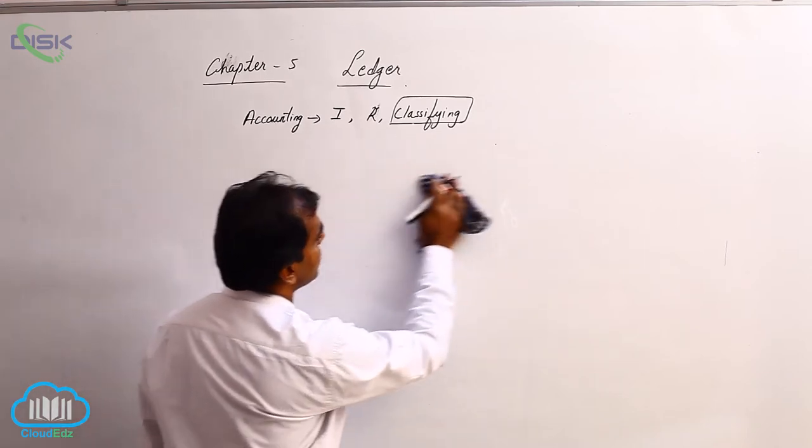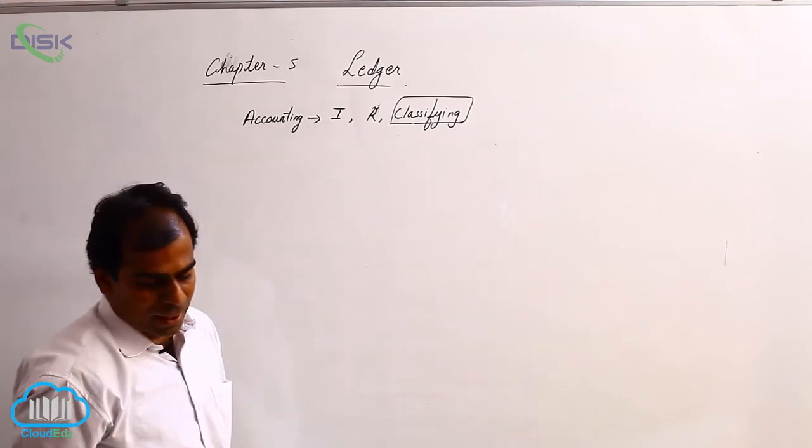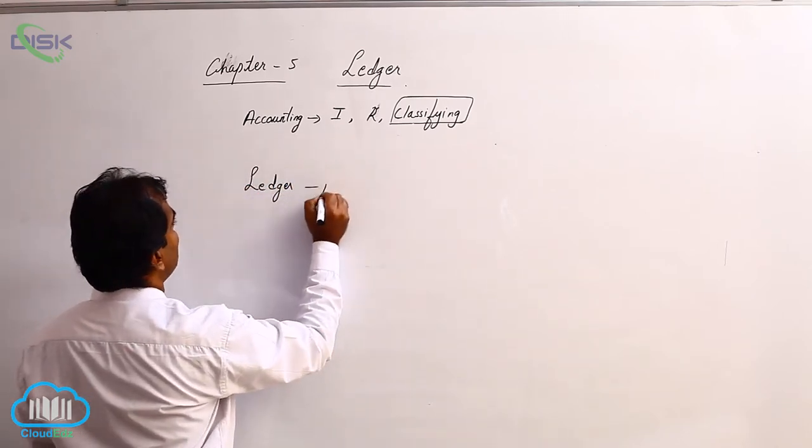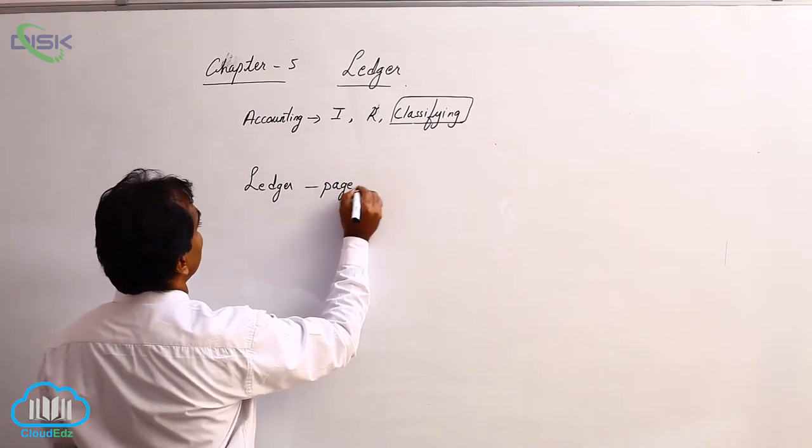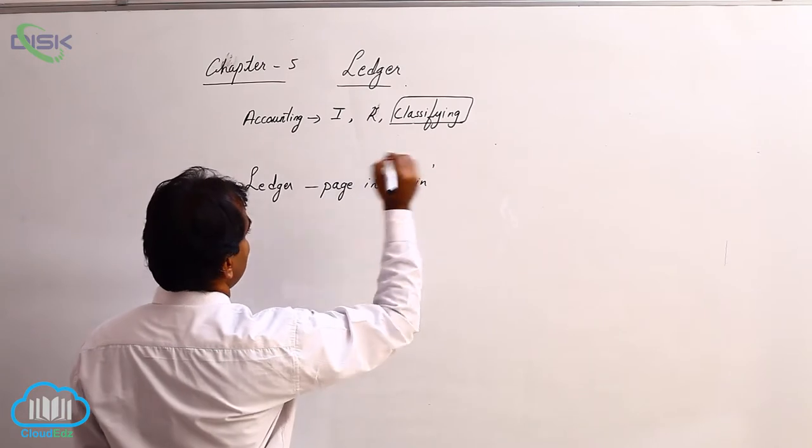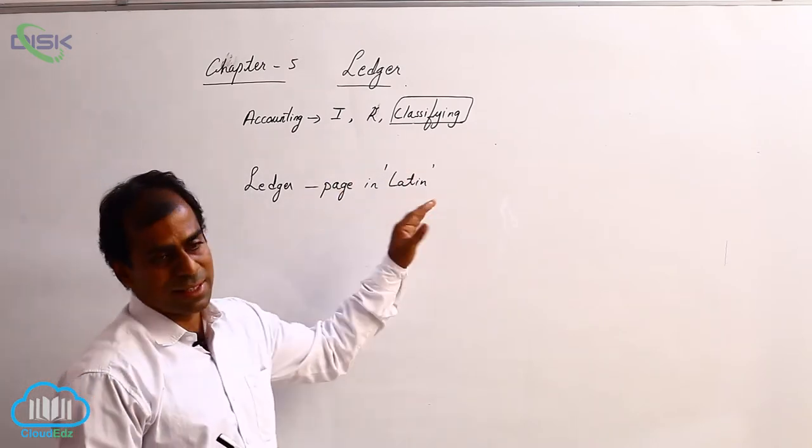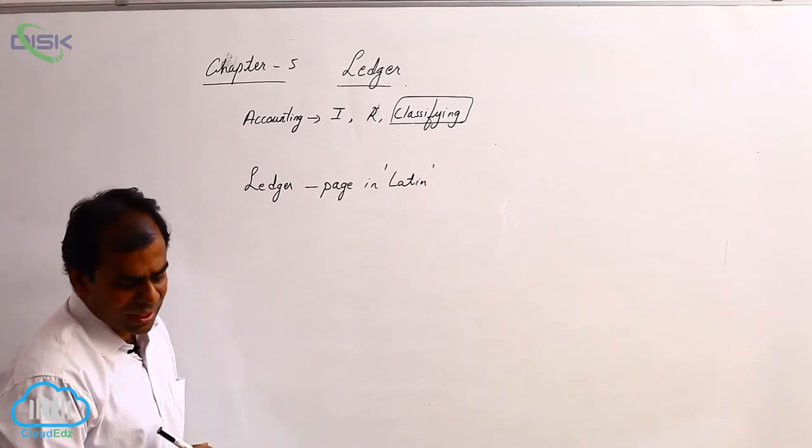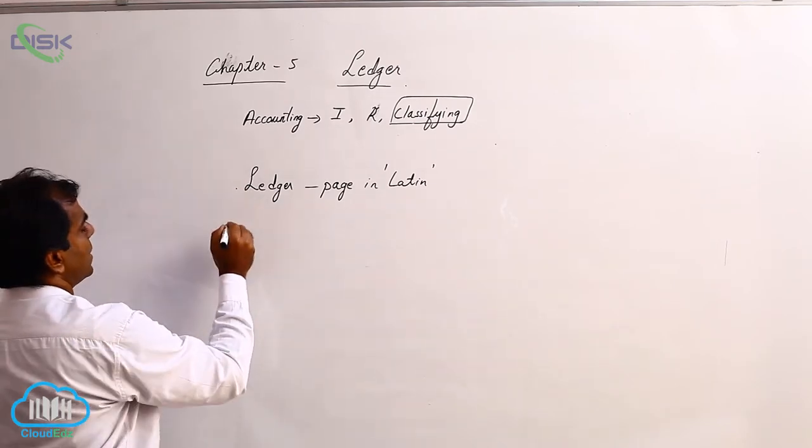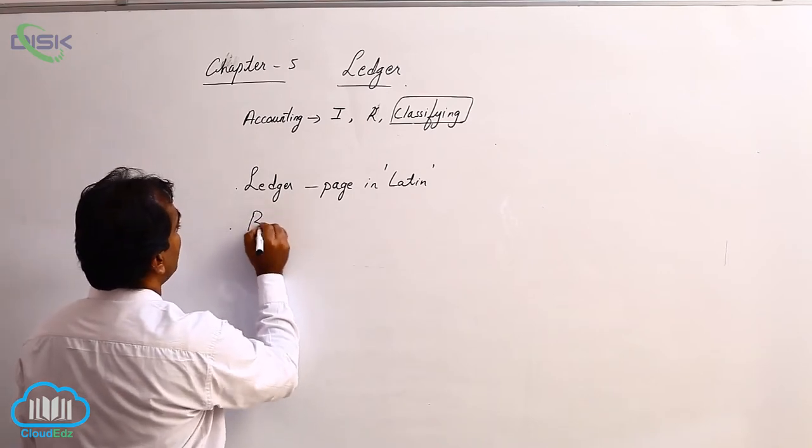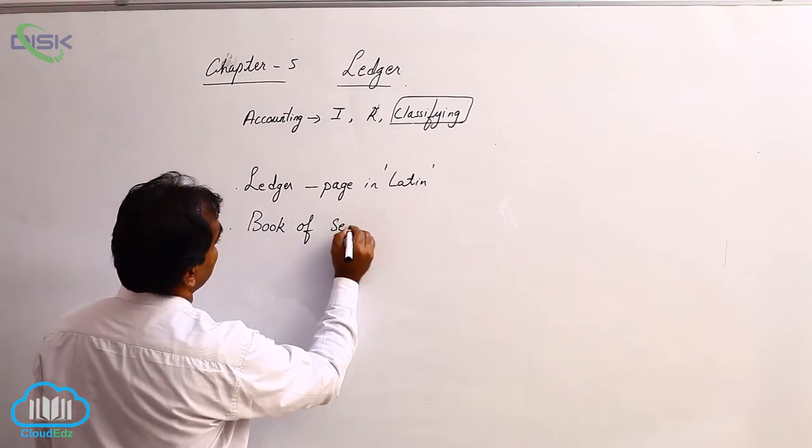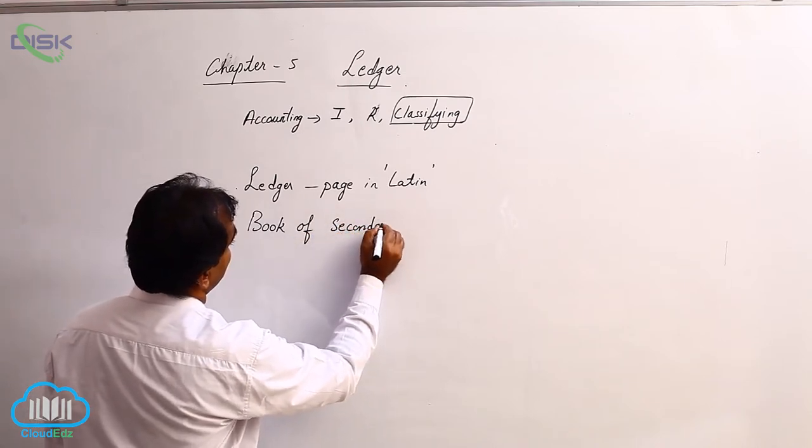Now let us see the other features of Ledger. Ledger literally means page in Latin language. Now next is what we do, it is also called as book of secondary entry.